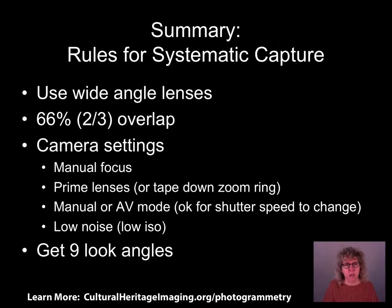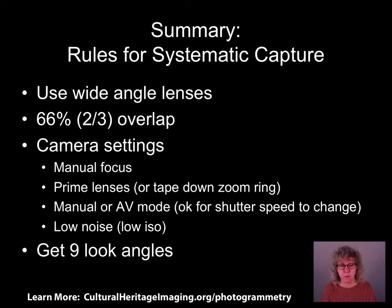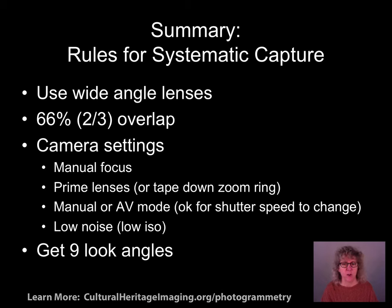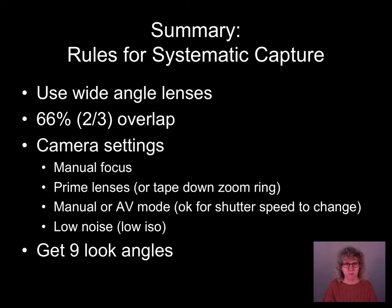In summary, the key rules for good photogrammetric data capture are: use wide-angle lenses; use 66% or two-thirds overlap when moving the camera; lock the camera down in manual focus; use prime lenses, or tape the zoom ring if using a zoom; use manual or aperture priority mode so the aperture doesn't change; keep noise low. And most importantly, get nine look angles on every part of your surface — that's going to give you a really great, measurable, reproducible result. Thank you.